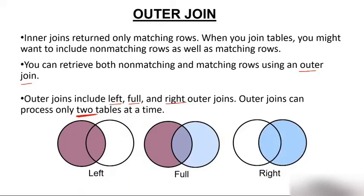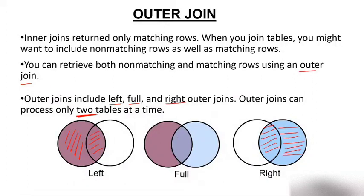In the Venn diagram for left outer join, you get the matching rows plus all non-matching rows from the left table. For right join, you get matching rows plus non-matching rows from the right table. For full join, you get matching rows plus non-matching rows from both the left and right tables.